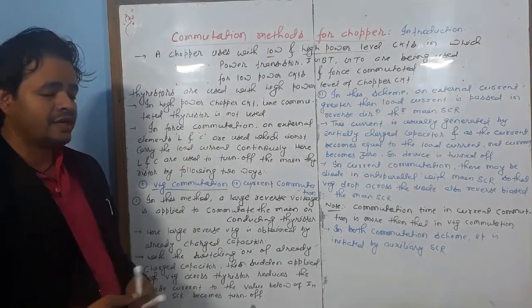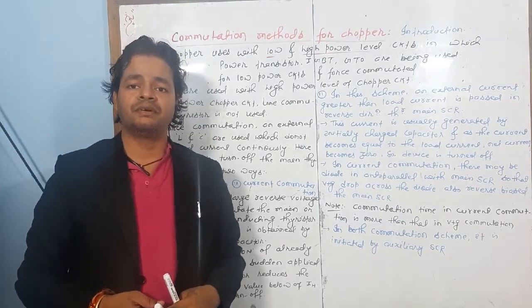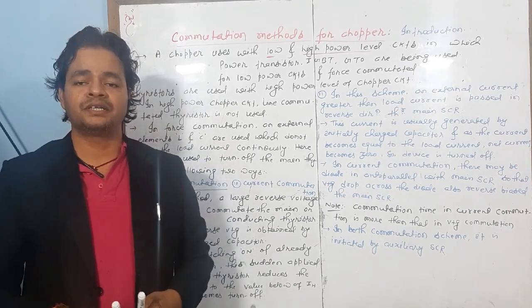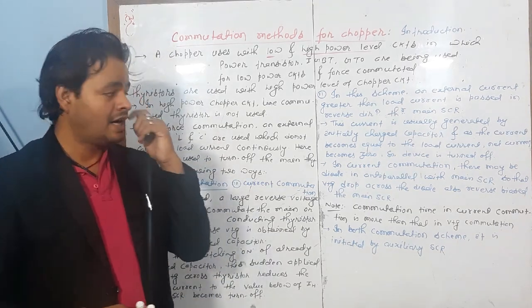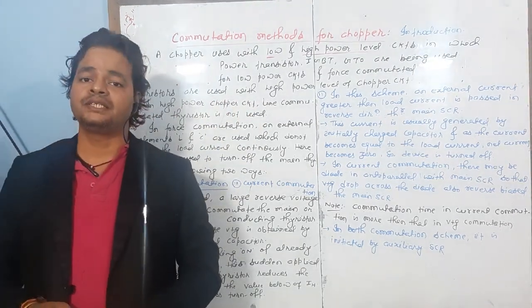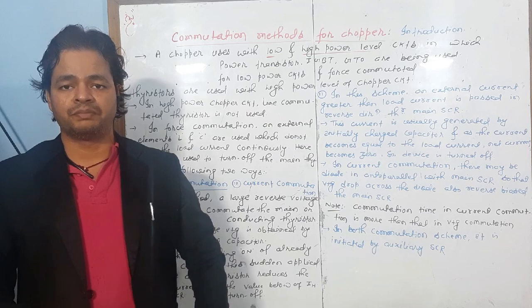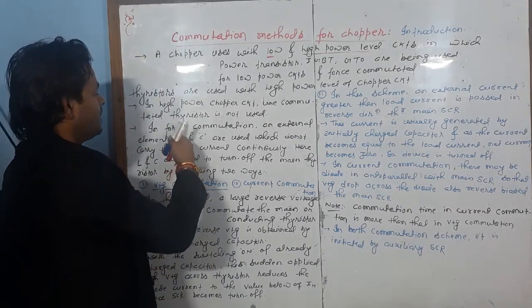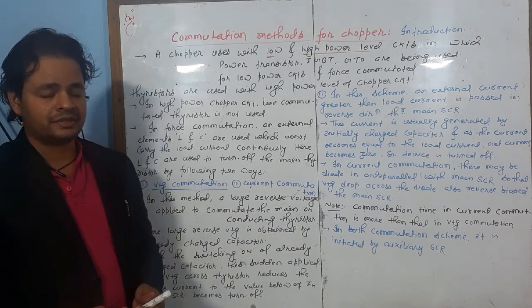Because the chopper is a DC-to-DC converter in which fixed DC is converted into its equivalent variable DC. With line commutation, we need AC input, which is not possible with the chopper. Hence, line commutated thyristor is not used.